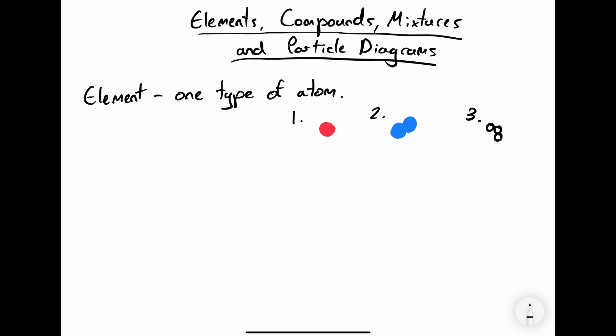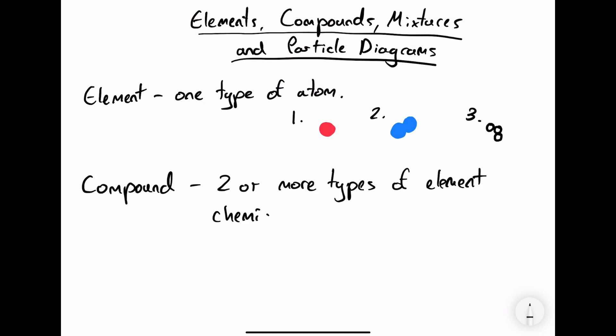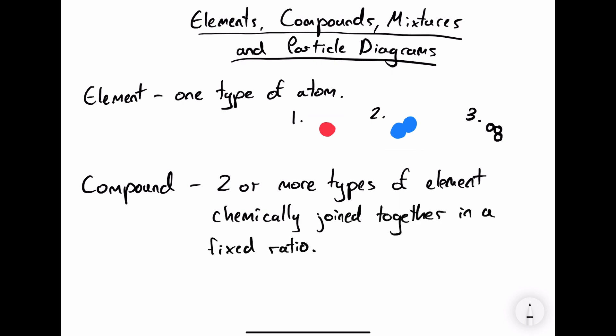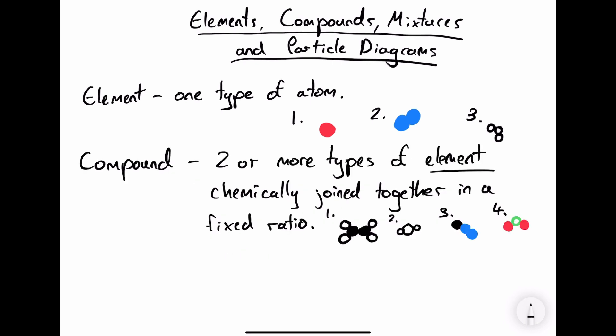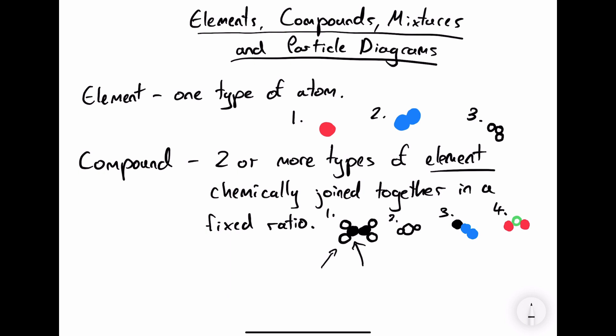A compound is two or more types of element — you can replace the word element with atom if you wish — chemically joined together in a fixed ratio. Here are four examples of the types of particles you could see in a particle diagram of a compound. Notice that they're made of two or more different kinds of element chemically joined together. We show that they're chemically joined by drawing them touching each other, and we know it's two different kinds of element because the atoms are drawn in different ways, either using different sizes or different colours.